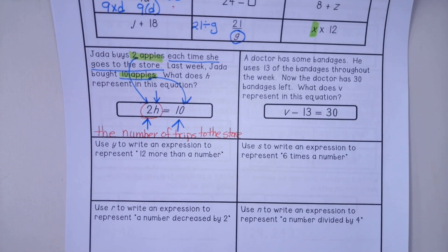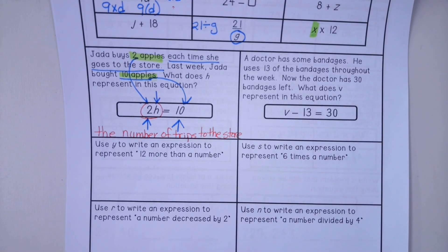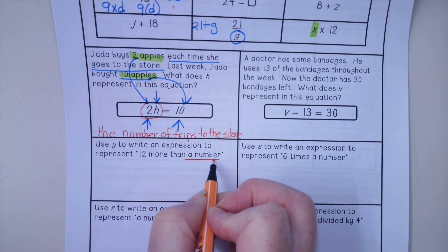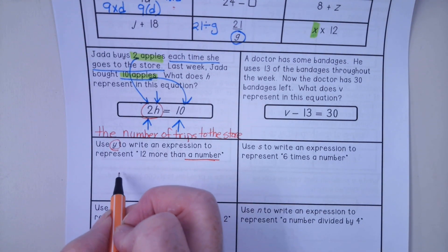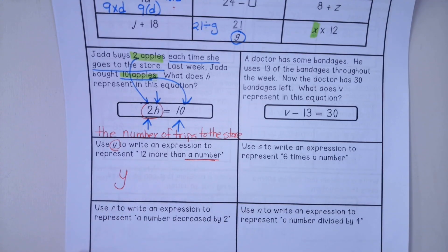Next question. Use Y to write an expression to represent 12 more than a number. So our variable is the number, and that is going to be represented by Y. So that first letter is Y.